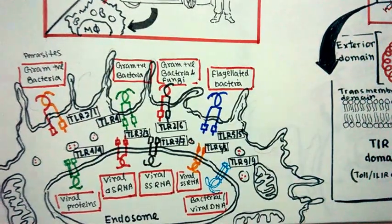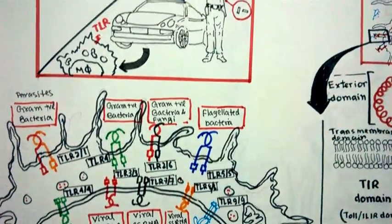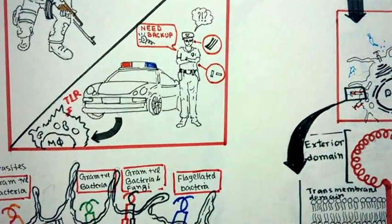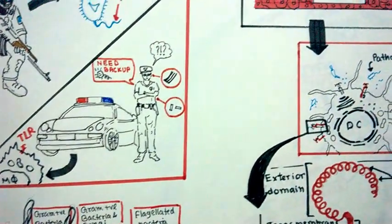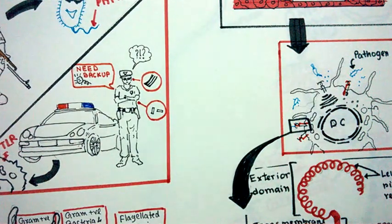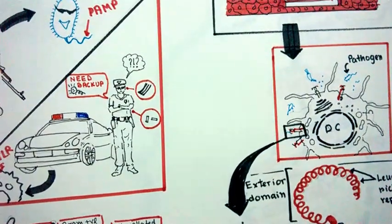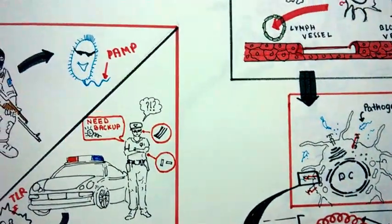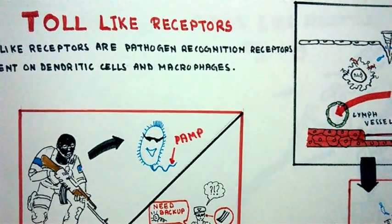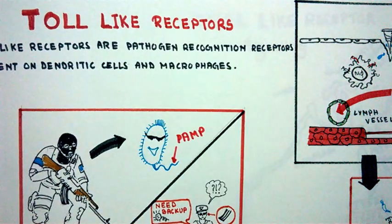That concludes the video on toll-like receptors. Next we'll talk about TLR signaling: how the TLRs recognize the pathogen and what the dendritic cell performs after recognizing the pathogen. So if you like my video, give it a quick thumbs up and don't forget to subscribe. Please leave your comments below. Thank you.